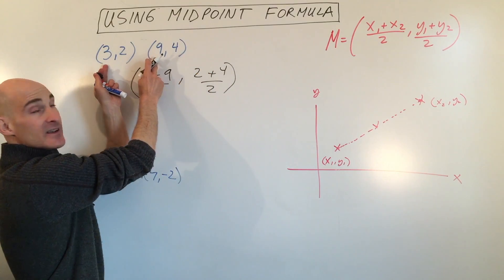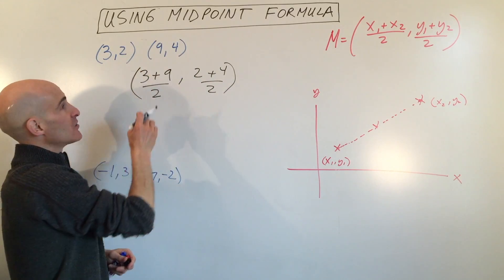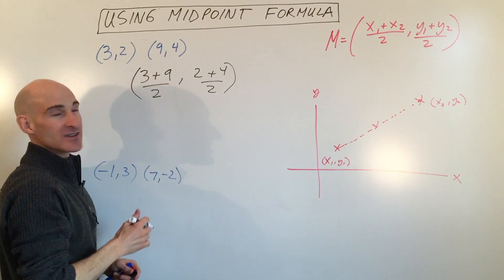Okay, you just want to be careful that you add the x's together and divide by two, and you add the y's together divided by two. You don't want to add these or these. You want to add the x's and then the y's.